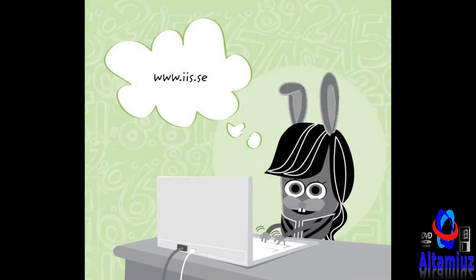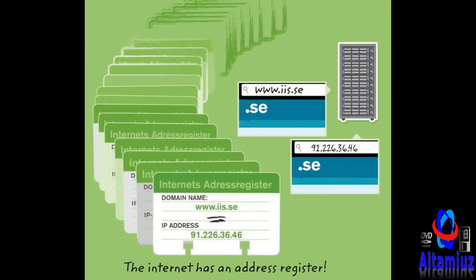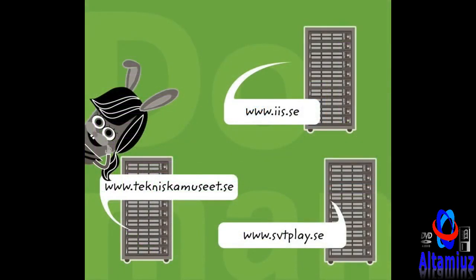That is why computers translate number addresses to letters. As people, we read and talk with words and letters, not with numbers. If you write or click on a link to a web address, your computer then contacts the right server with help of the internet's address registry. But actually, the address is translated to a set of numbers and points. Addresses on the internet can be short, like iis.se, or long, like www.techniskamuseet.se. An address with letters instead of numbers is called a domain name.